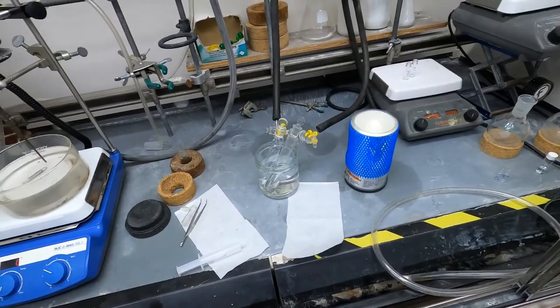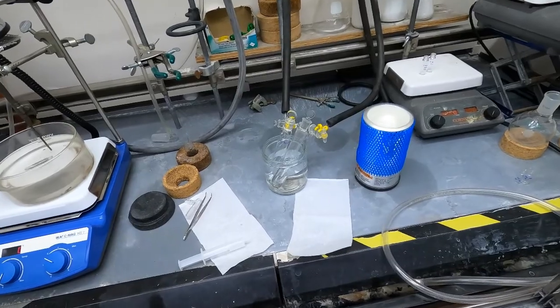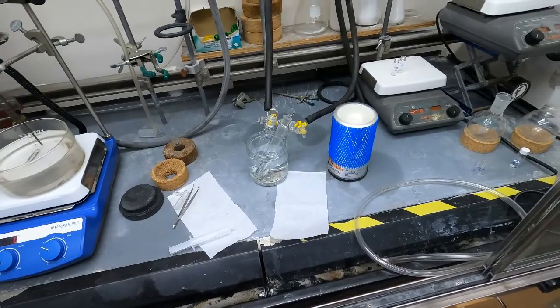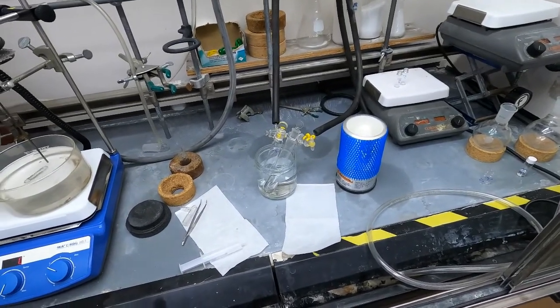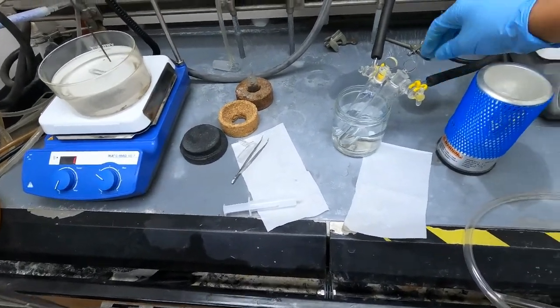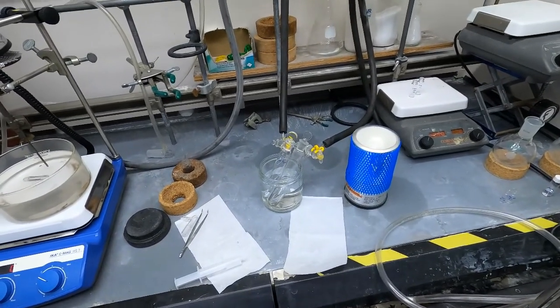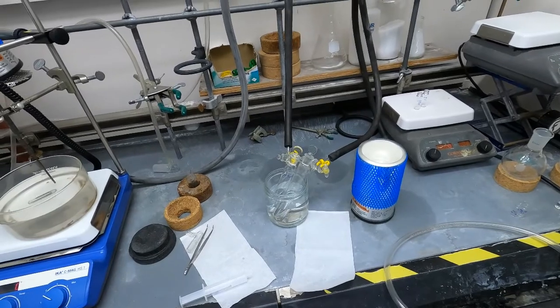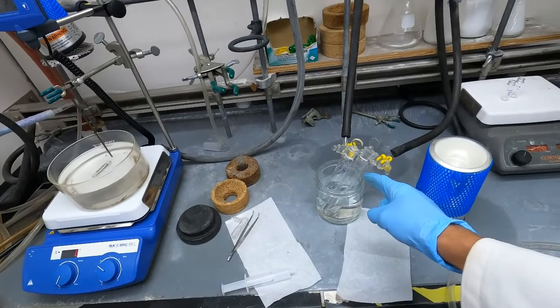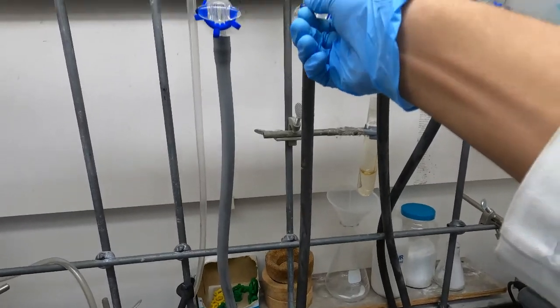A couple other things you're going to need is a high vacuum setup, a Schlenk line, and a dewar of liquid nitrogen. To get started I have both of my Schlenk tubes connected to my Schlenk line and both stopcocks are closed. The first thing we can do is open these lines up to vacuum. The contents of the tube will not be opened to vacuum because the stopcock is closed.